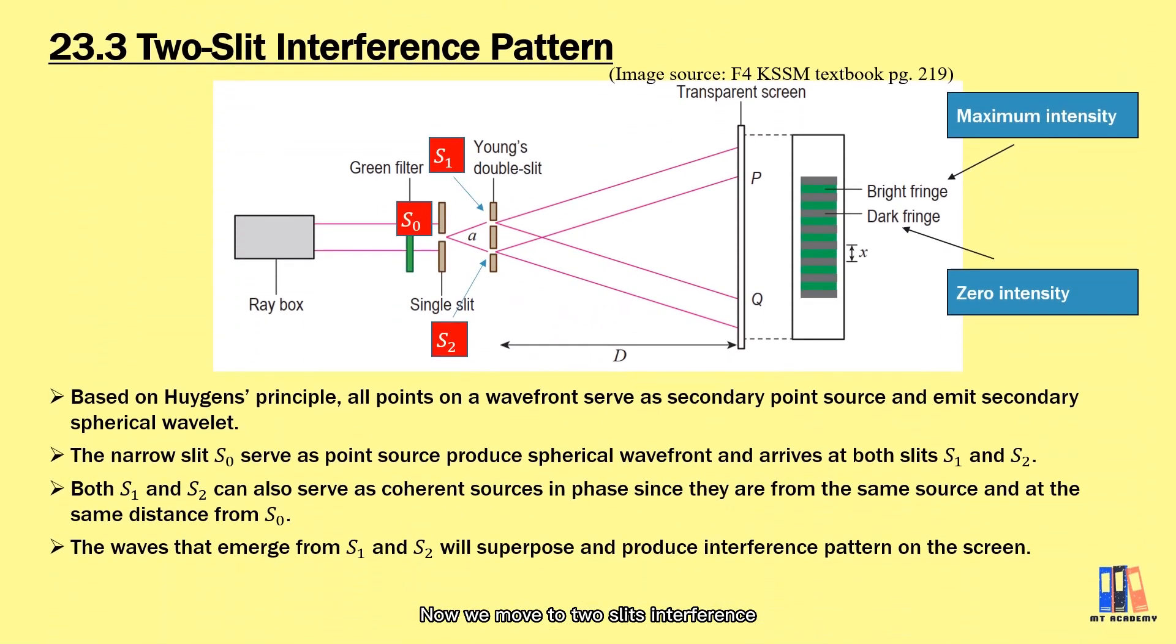Now we move to two-slit interference. Young's experiment is quite famous in our syllabus, where we have one source to produce the interference pattern. We can explain the interference phenomenon based on Huygens' principle. It states that all points on the wavefront serve as secondary point sources and emit secondary circular wavelets. From slit S0, it will be the point source to produce spherical wavefront and arrive at both slits S1 and S2. This ensures that both S1 and S2 become coherent sources and in phase. The waves that emerge from S1 and S2 will superpose and produce interference pattern on the screen.